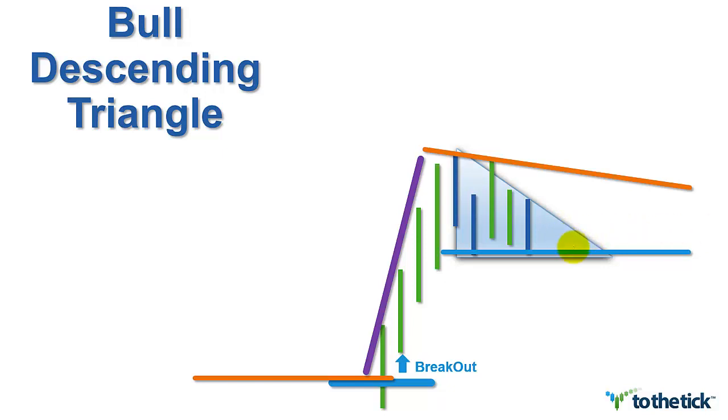Now, the more conservative approach to trade this, and most technicians are going to only talk about this, they're going to want you to wait for it to actually break through that upper resistance line. It's a more conservative approach and there are options in between. But again, we want it to happen fairly quickly as a trend continuation move.